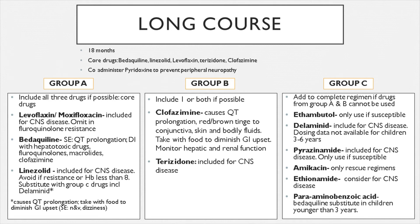For group B medication, include one or both in addition to group A. Group B includes clofazimine, which also causes QT prolongation and a red-brown tinge to your conjunctiva — similar to what rifampicin does. Take it with food to diminish GI upset, and monitor hepatic and renal functions. Terizidone is included for CNS disease, as most of these drugs distribute widely and can enter the CSF.